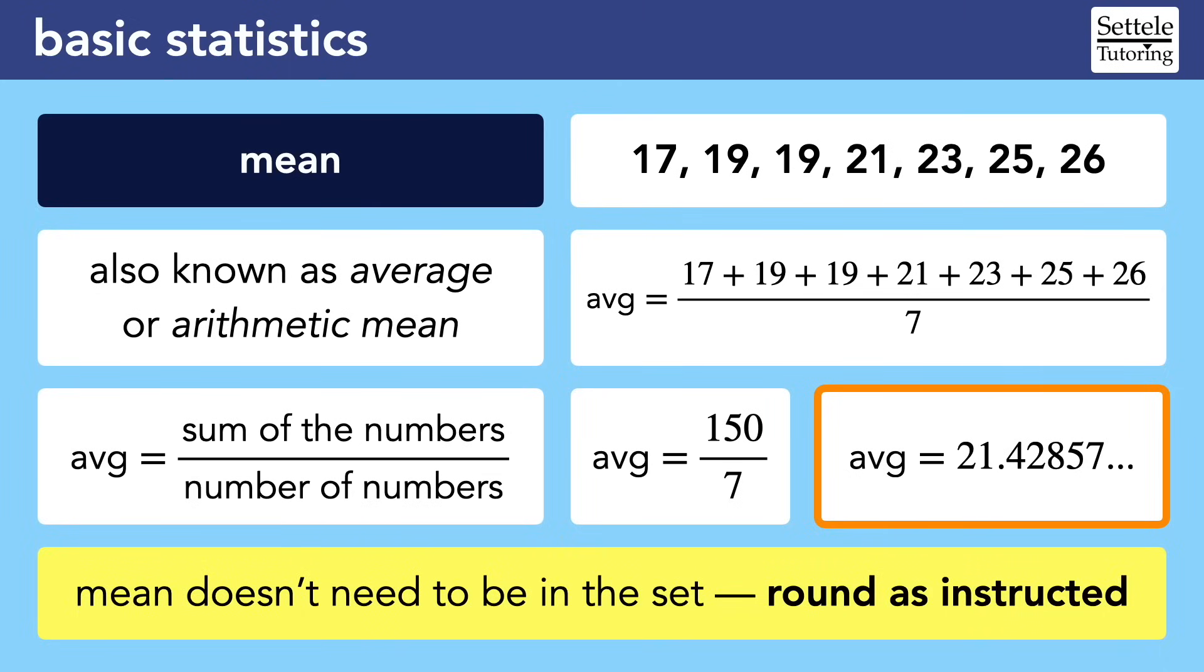It's extremely important that you pay attention to the SAT question's instructions when you get a decimal answer. If they tell you to round to a specific digit, make sure you follow that instruction or you will get the question wrong. If they don't tell you to round, then follow the general instructions for student-produced response questions. Remember that you can also answer with fractions, and in this case, 150 over seven would be perfectly fine to submit as your answer.